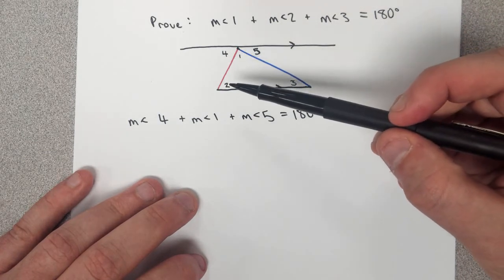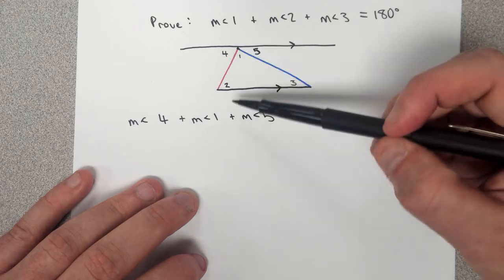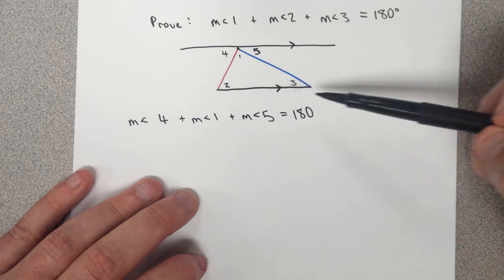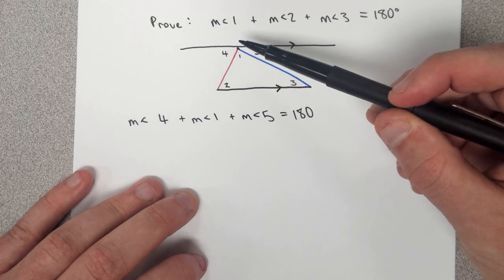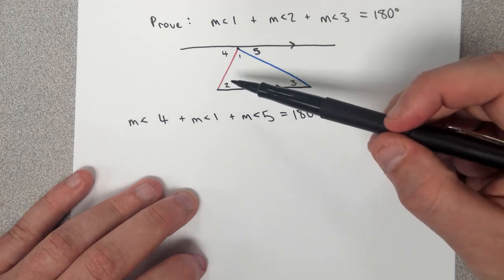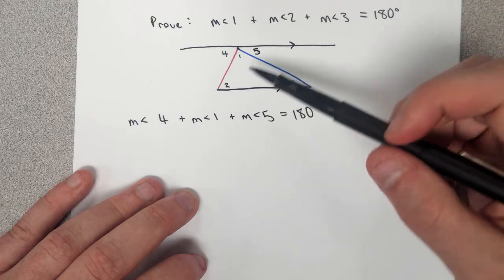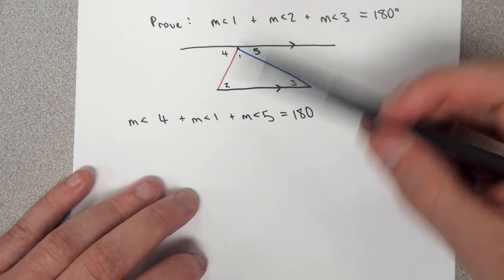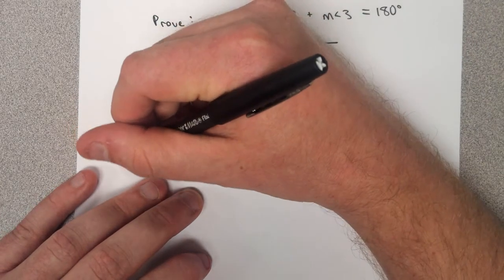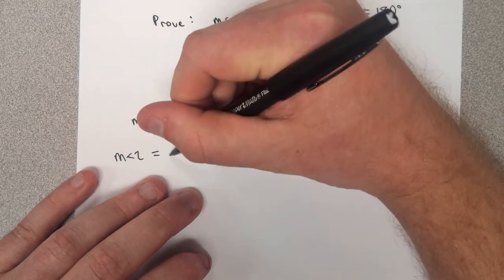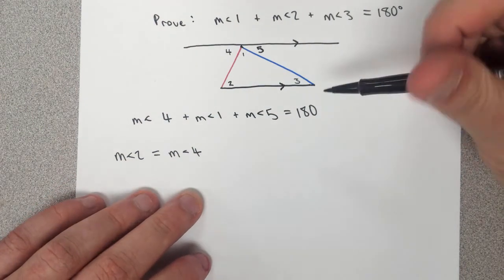And now if we look at angle 2 and angle 4, we can see that there's a relationship here. With these lines being parallel, if we look at this red line as a transversal, then angle 2 and angle 4 are alternate interior angles. And when parallel lines are cut by a transversal, alternate interior angles are congruent. So we could say that the measure of angle 2 is equal to the measure of angle 4.